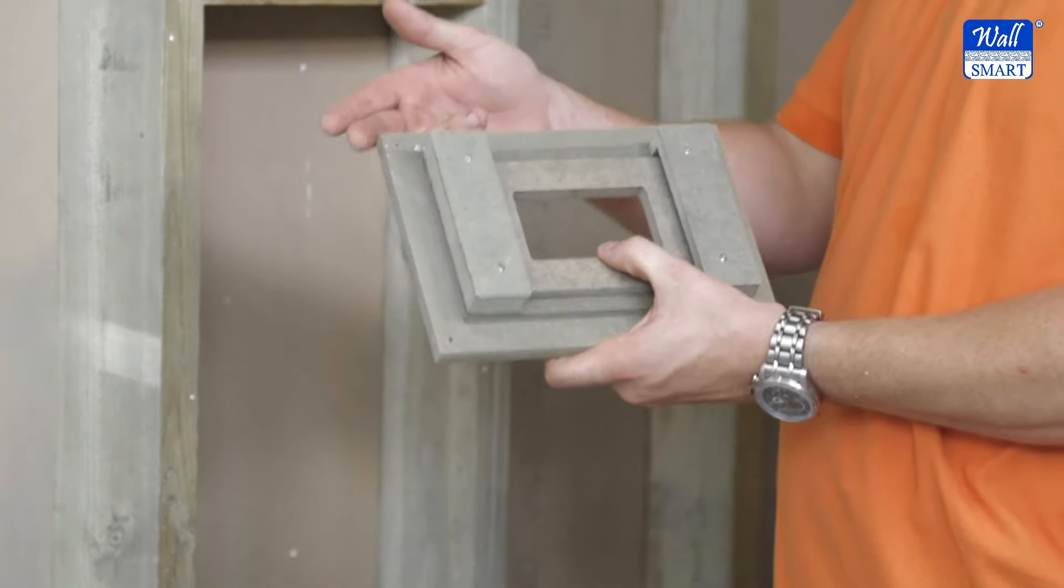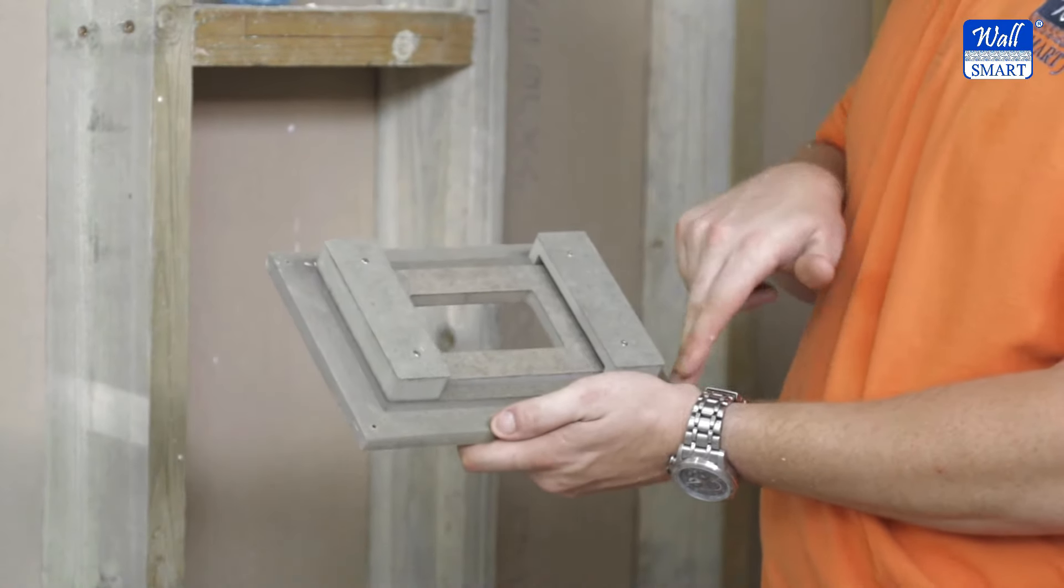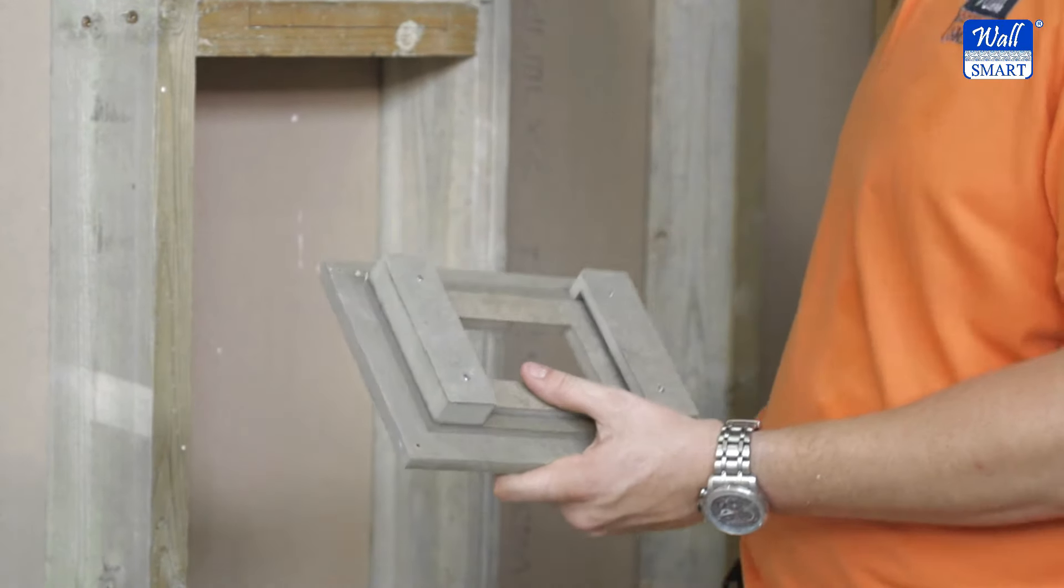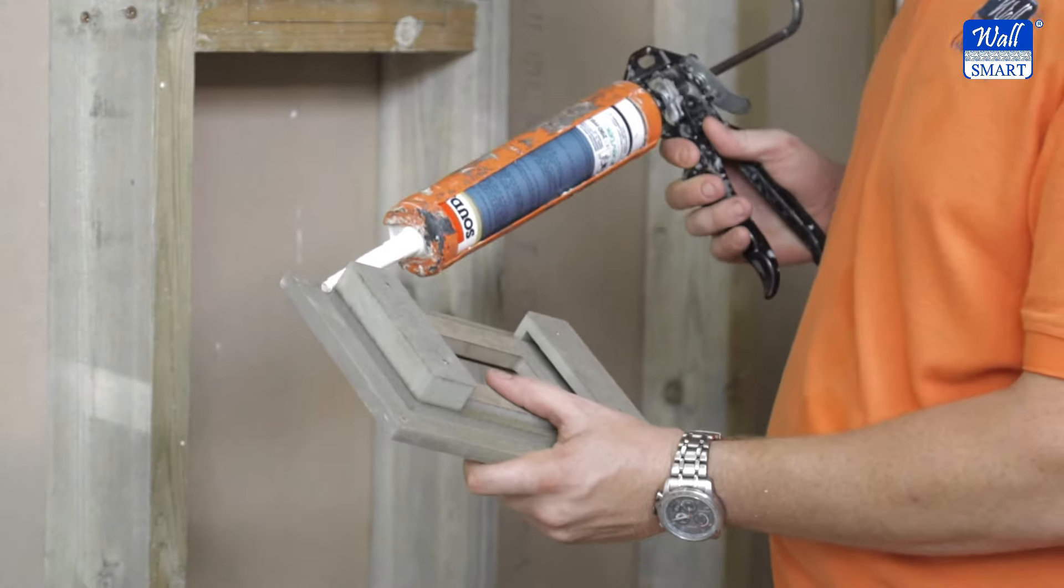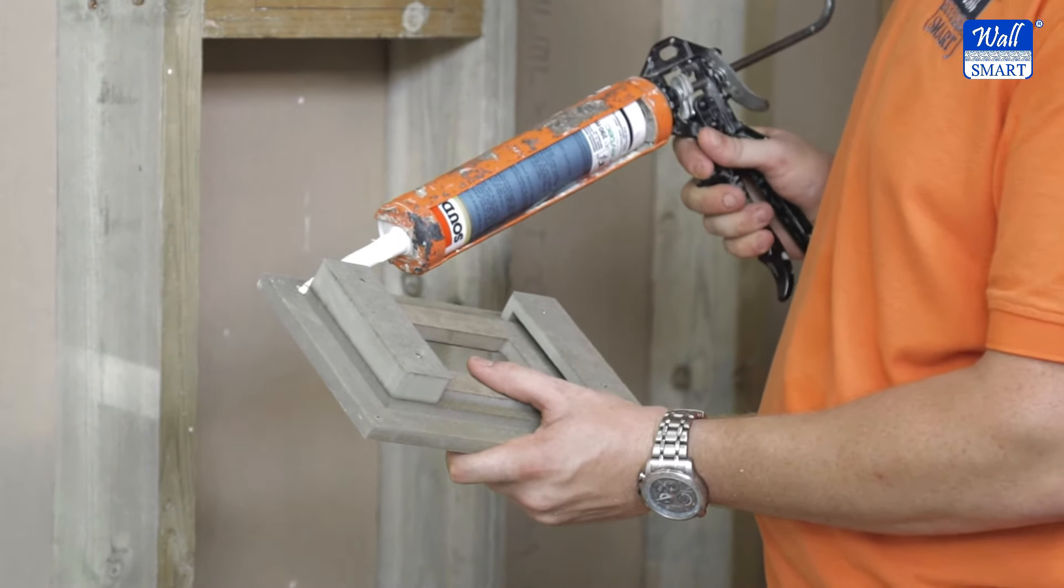To install the mount, apply structural adhesive to the back step of the mount and check that the mount is perfectly level when applying it to your horizontal supports.